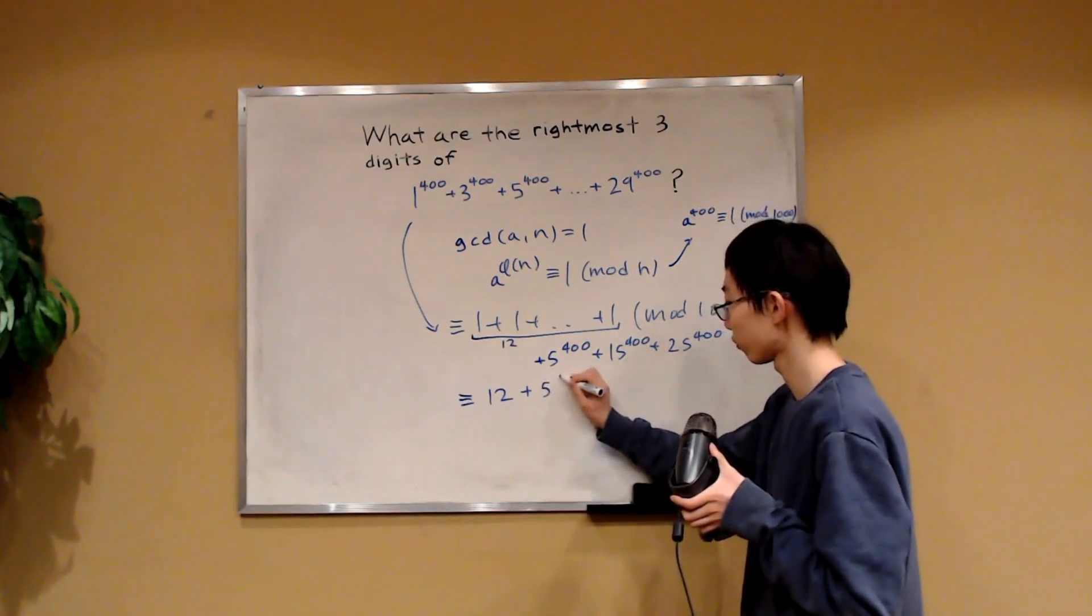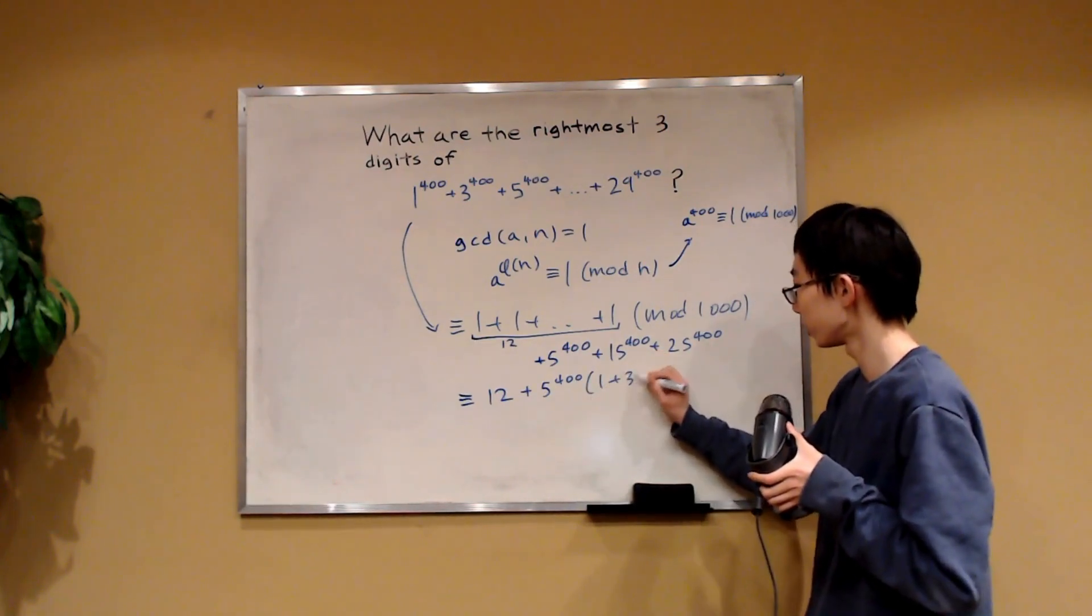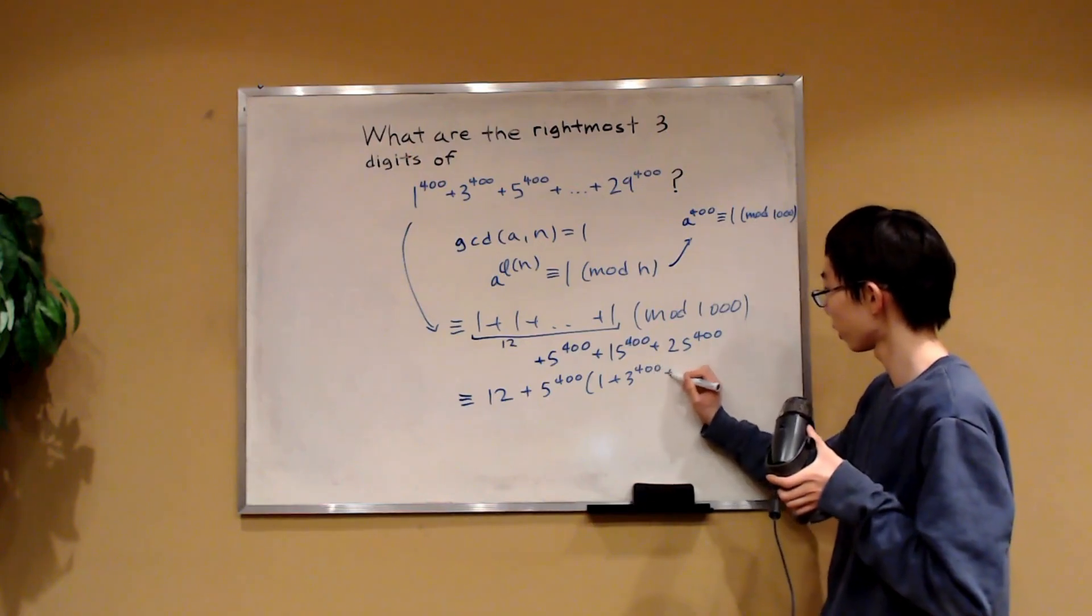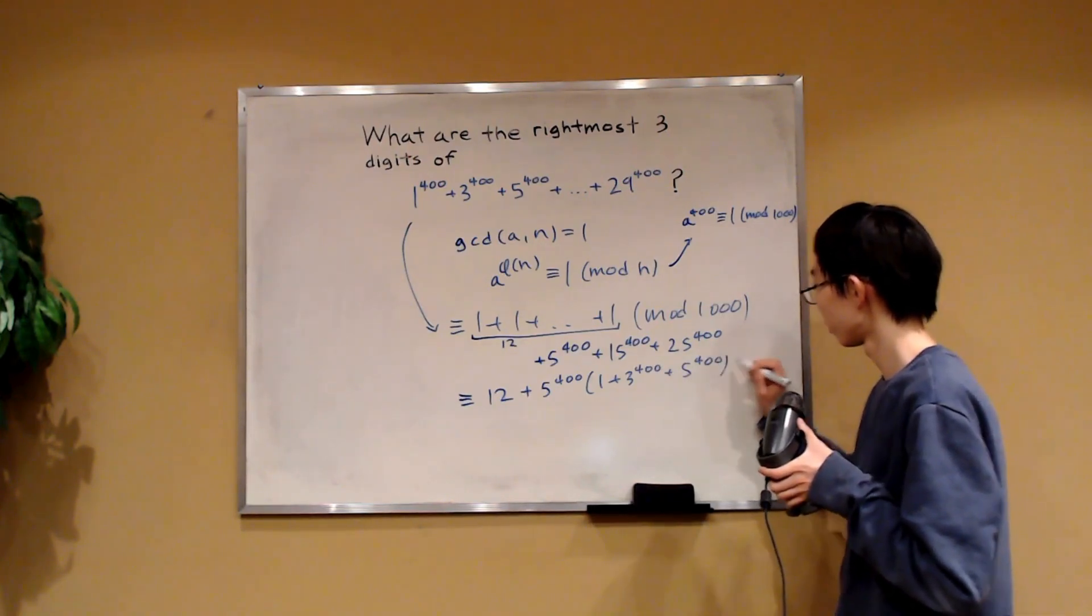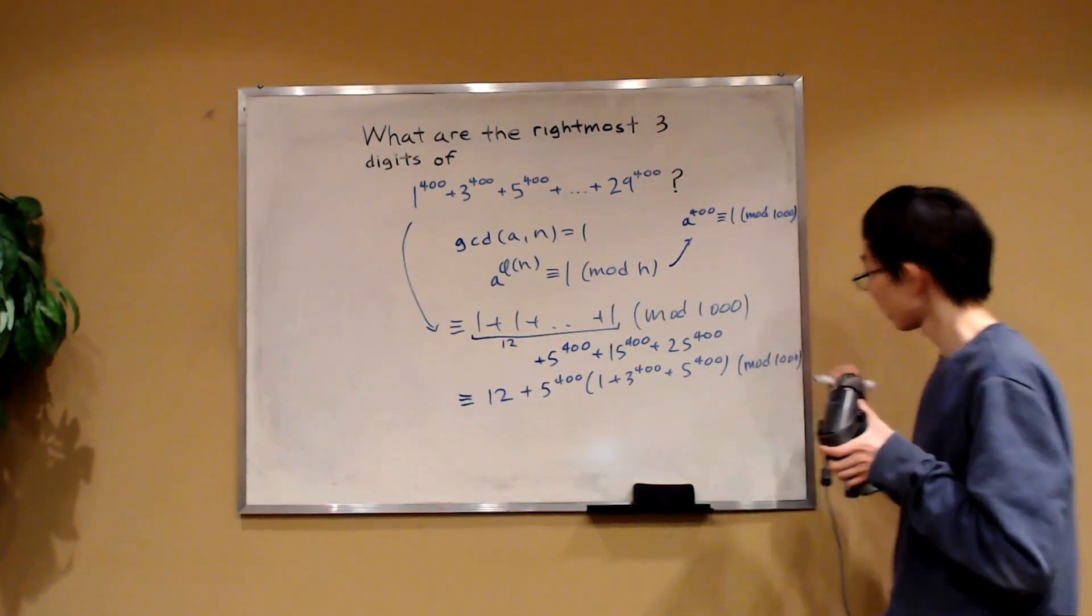So that's 5 to the 400 and then that's 1 plus 3 to the 400 and then plus 5 to the 400 and then mod 1,000, right?